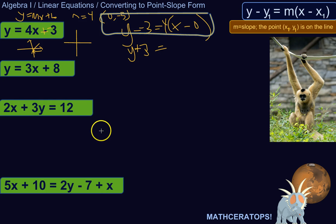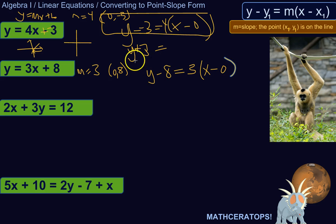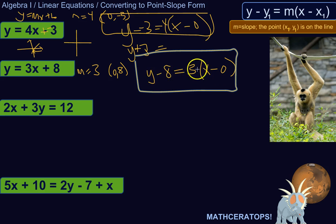Let's try another one in slope-intercept form. Given this equation in slope-intercept form, we know the slope is 3, and we know the Y-intercept is (0, 8). So we know the slope and a point on the line, so we can rewrite it: Y minus 8 equals 3 times X minus 0. You might ask why write X minus 0 instead of just X — but writing it in this form, even if redundant, conveys information about the line: a point on it and its slope.